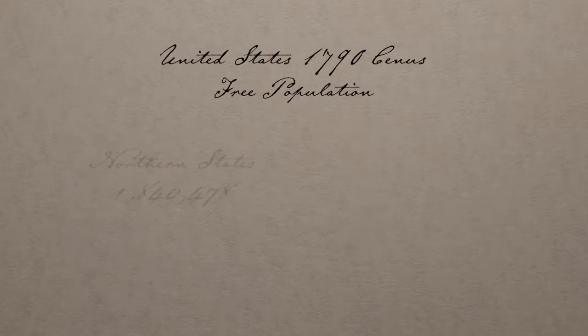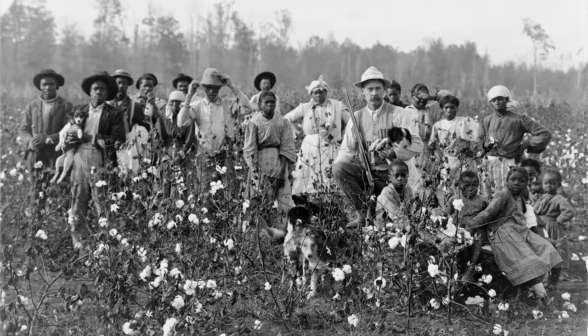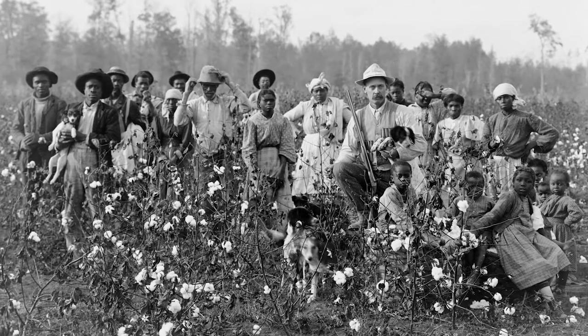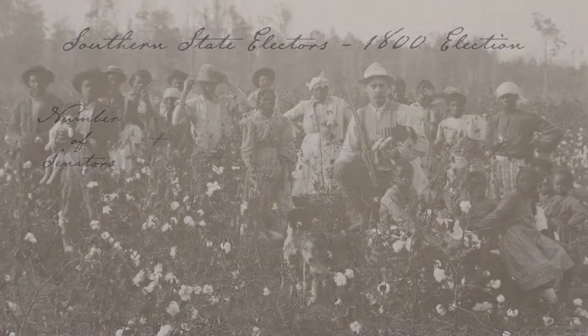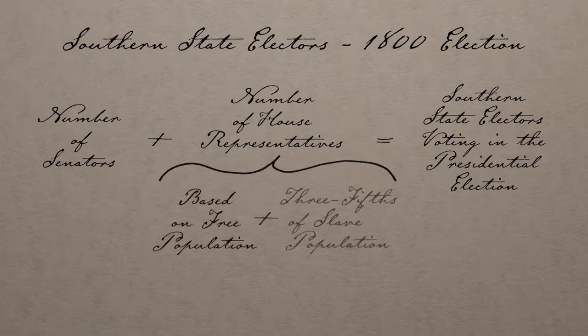Without an electoral college, if you put things to a direct popular vote, the North would win every time — because the South doesn't let a huge part of its population, called slaves, vote. But with an electoral college, the South can count its slaves, albeit with a discount: the three-fifths clause.